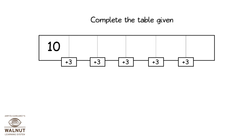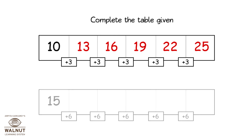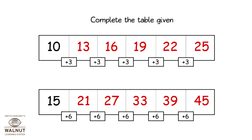Starting at ten, let's skip count by three: ten, thirteen, sixteen, nineteen, twenty-two, and twenty-five. Starting at fifteen, skip count by six: twenty-one, twenty-seven, thirty-three, thirty-nine, and forty-five.